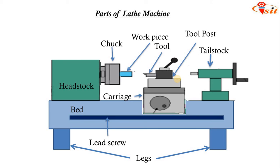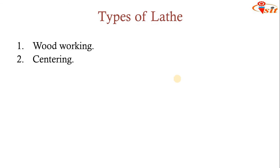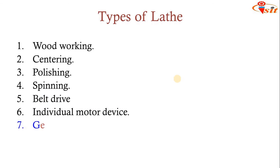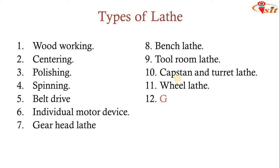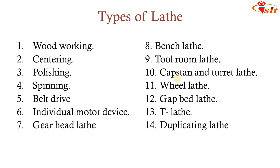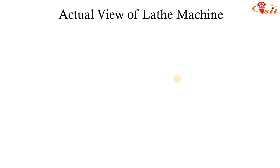Now we are going to see what are the types of lathe machine. Based on the operations, the types are: woodworking lathe, centering lathe, polishing lathe, spinning lathe, belt drive lathe, individual motor drive lathe, gear head lathe, bench lathe, tool room lathe, capstan and turret lathe, wheel lathe, gap bed lathe, T-lathe, duplicating lathe, and automatic lathe. In small and medium scale industries, previous lathes have been replaced by automatic lathes to get good quality surface finish and better dimensional accuracy.